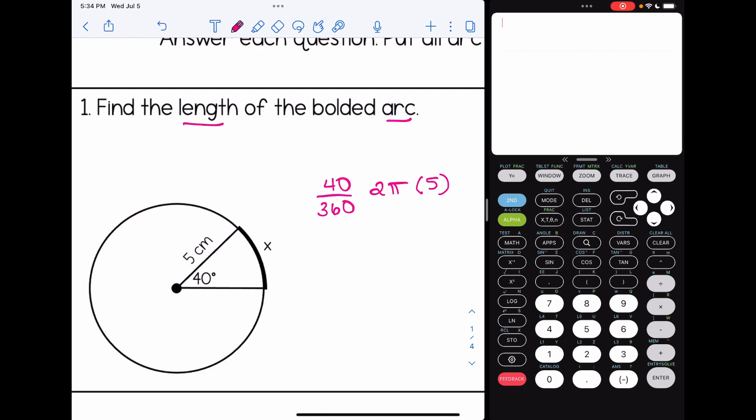So to type this into my calculator, here's what I'm going to do. I'm doing this in terms of pi, so I'm going to type in everything besides the pi symbol. So 40 over 360, you could have simplified that if you wanted, 2 and 5, and I get 1.1 repeating. I'm going to do math 1 to change that to a fraction, and I get 10 over 9, and pi is going to be my answer here. For the length, the unit would be centimeters.